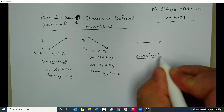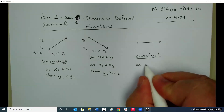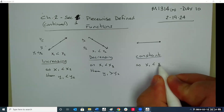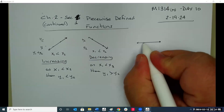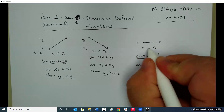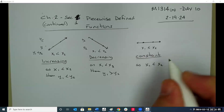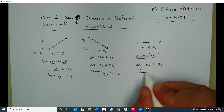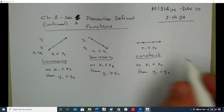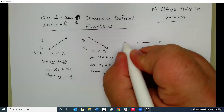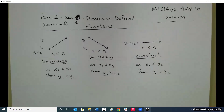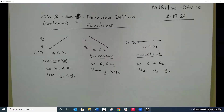A constant function: as x1 is less than x2, y1 equals y2. That's a constant function — it has no slope.